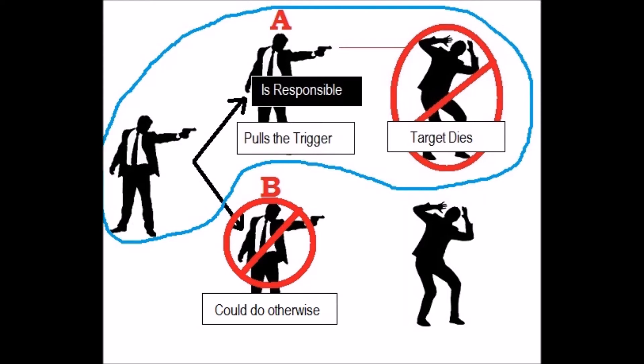And since the gunman is responsible for pulling the trigger, the gunman is morally responsible for the death of the target. That same logic would apply in world B, such that if the gunman had refrained from pulling the trigger, then the target would be spared. And if the gunman could have pulled the trigger, then the gunman was responsible for not pulling the trigger, and therefore was morally responsible for the target being spared.